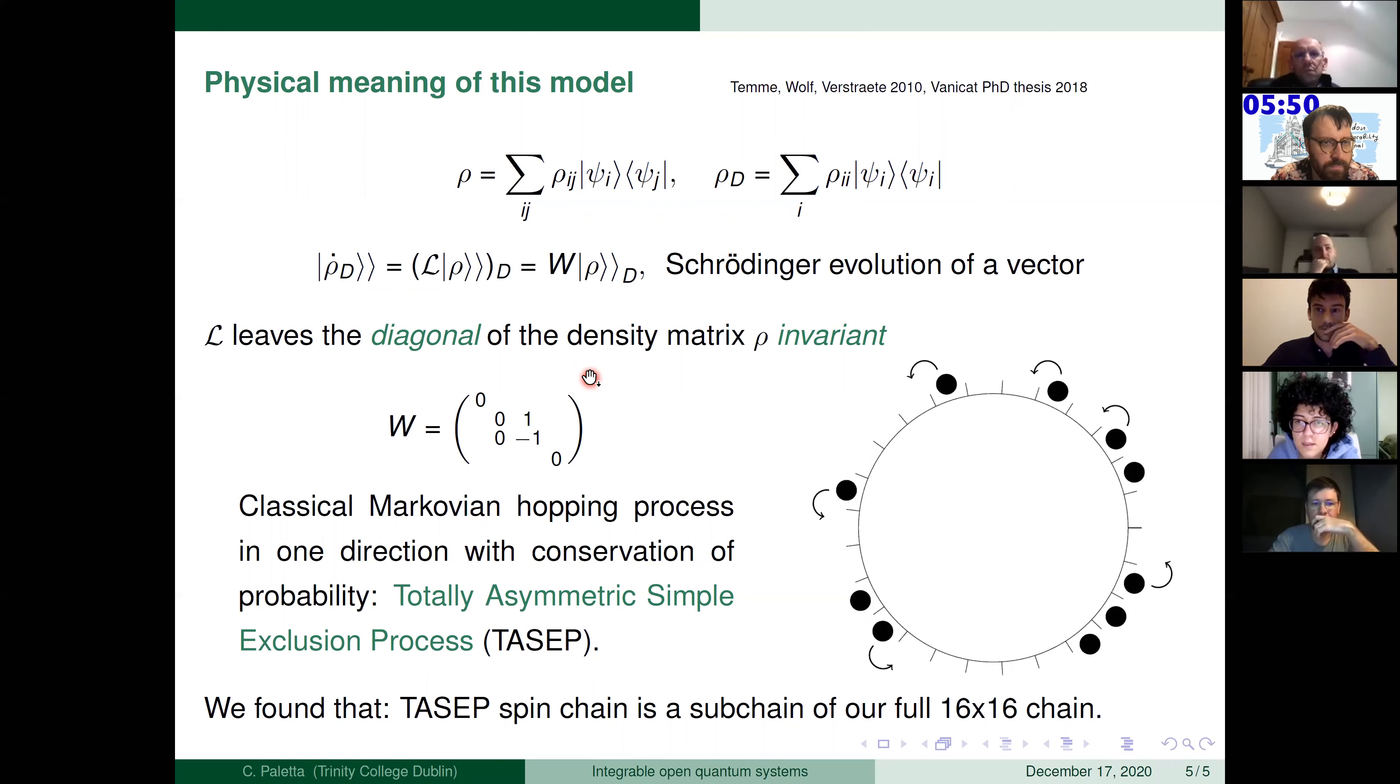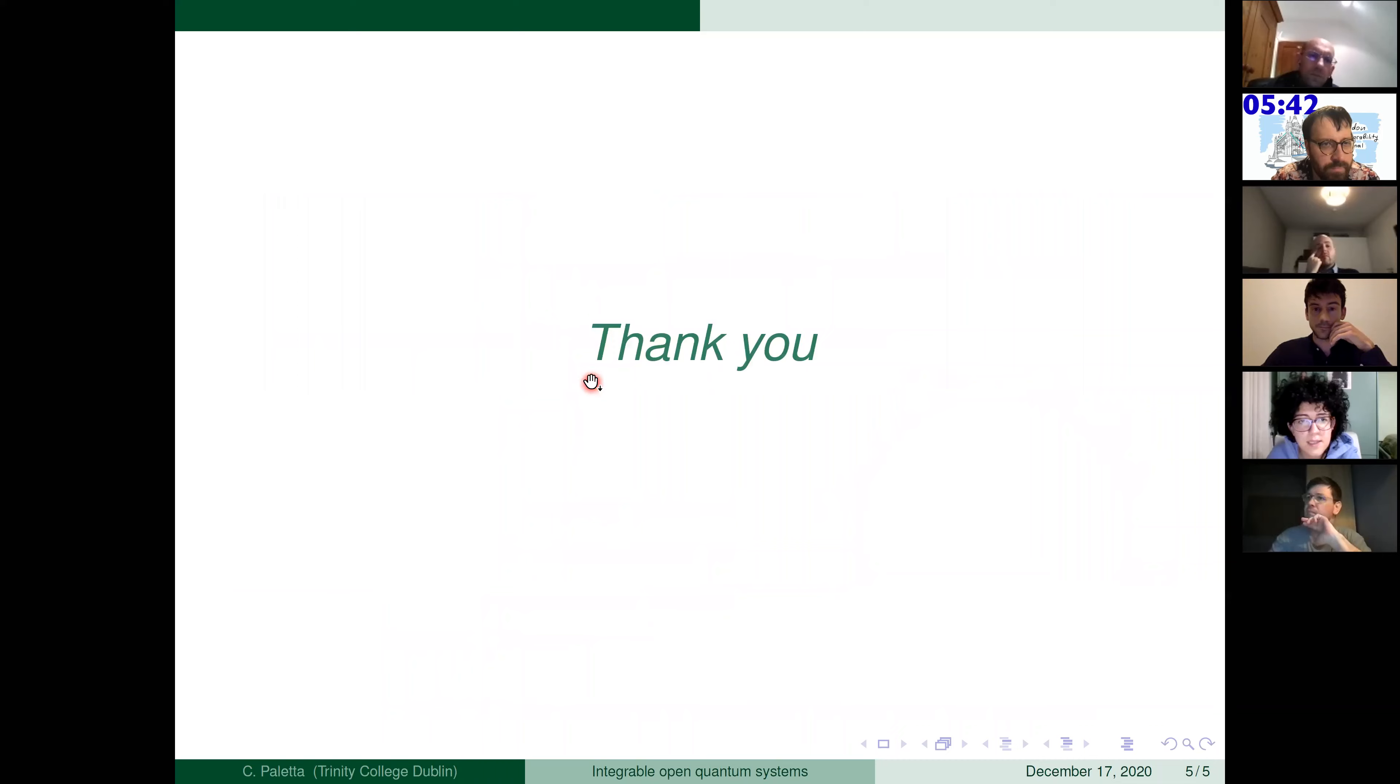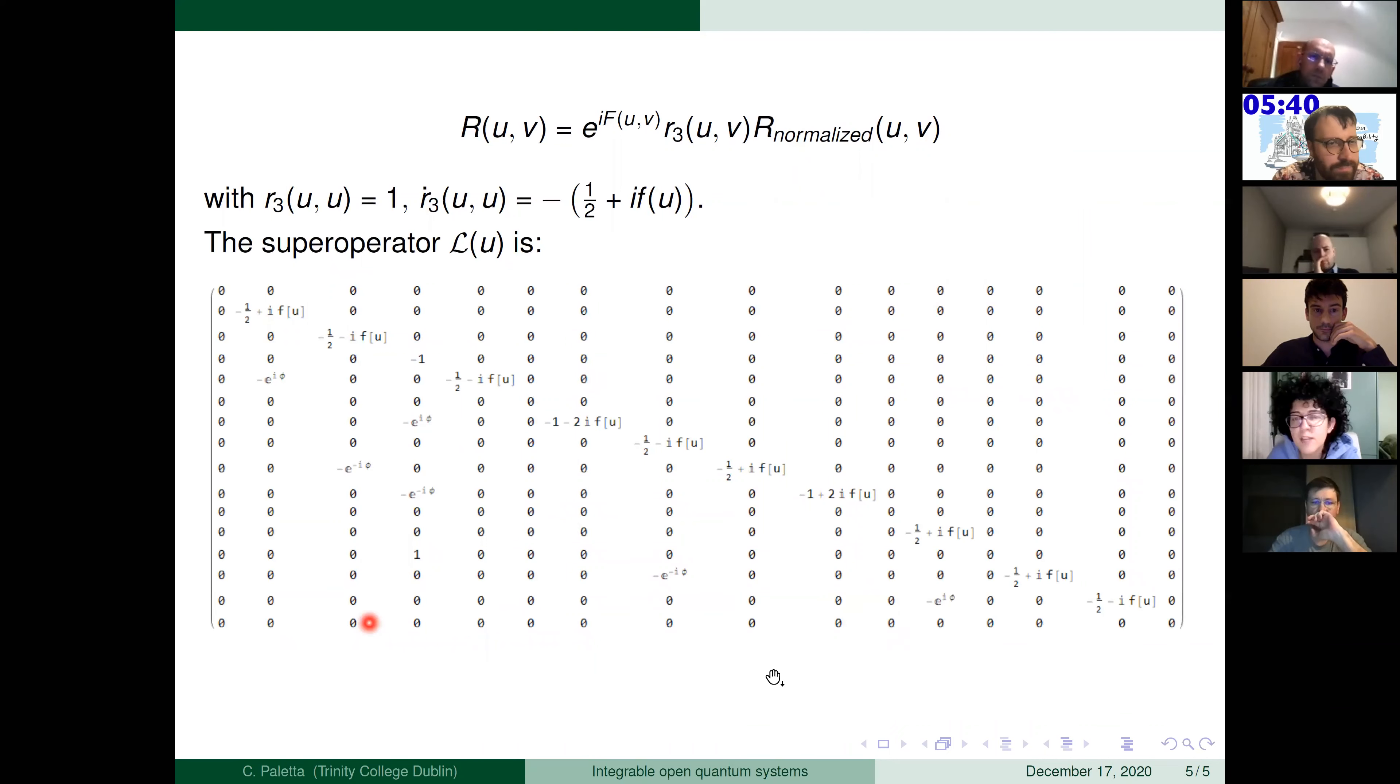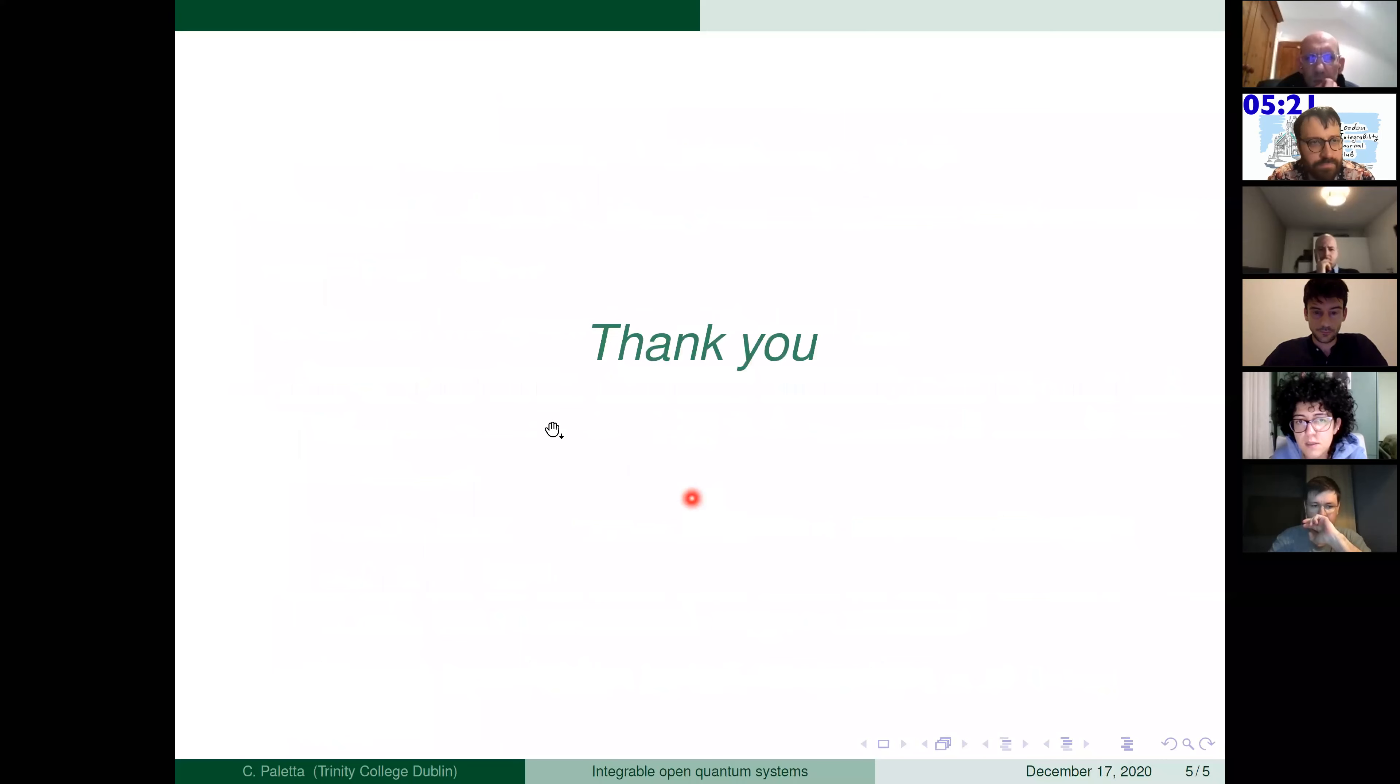And also, if I might add, only the diagonal sector of this super operator gives the TASEP model. In principle, the space is bigger. Yes, yes. This is the full super operator looks like this. Then if we multiply this by a vector with all the components, ρ₀₀ and so on, and just focusing on the first line, sixth line, and so on, it will give the restricted diagonal. That gives this matrix here.